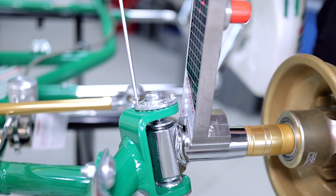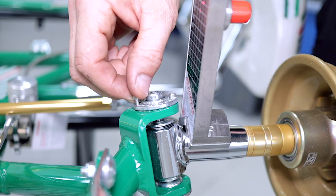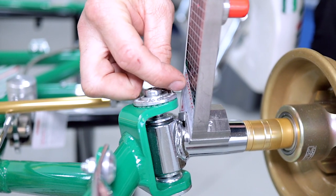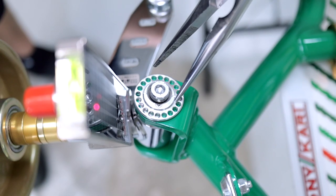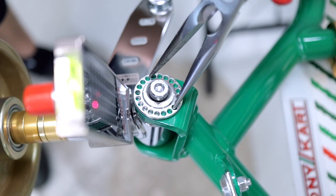Before we can make any adjustments, we need to remove the locking screws. So now with the pointy-nose pliers, we're going to adjust the camber adjuster